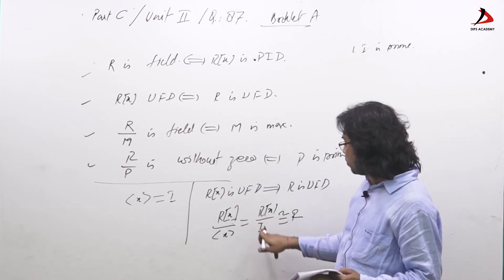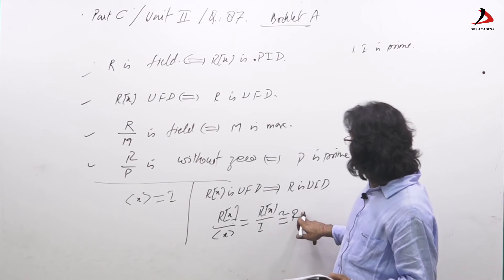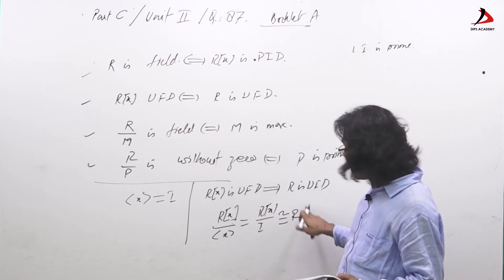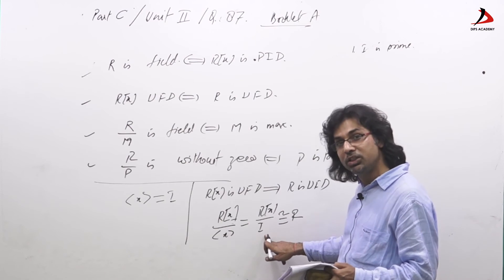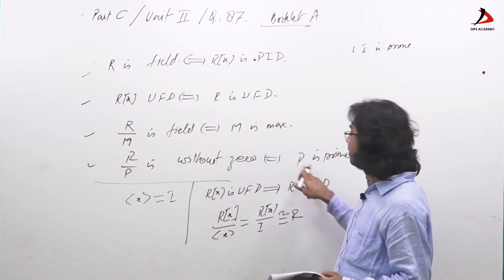How? Rx over I is isomorphic to R. R is UFD, so R has no zero divisor. So Rx over I has no zero divisor, so I has to be prime by this result.